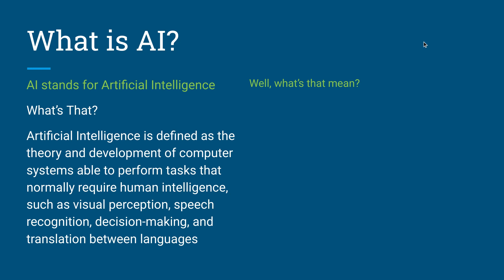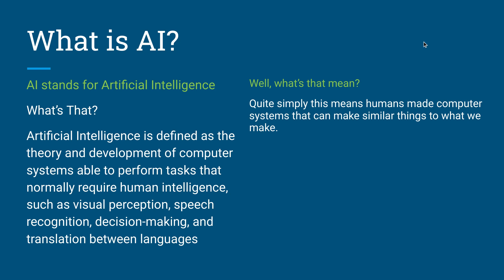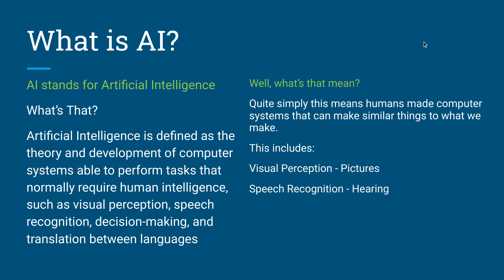It really just means we made computer systems that can do similar things to what we can do. That includes visual perception, like image search — I hear that's really great. Speech recognition: when you're talking to your phone, maybe you use Duolingo or Google Translate, or you've said 'Hey Siri' or 'Alexa' — those are all incorporations of AI. Decision making — AI can make decisions like us.